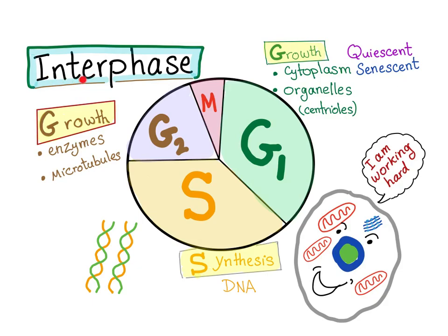Inter means between. Between what? Between two mitoses. Mitosis is the single most important event, so anything else is called interphase. Interphase means the G1, S, and G2 phases.